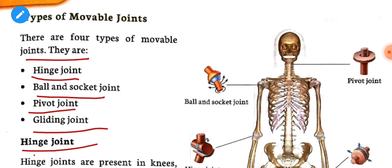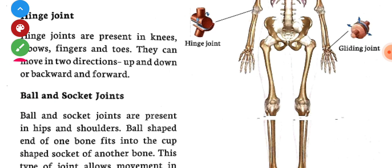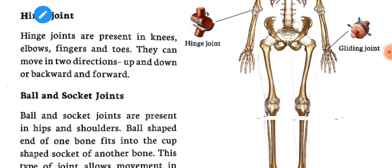Hinge joints are present in knees, elbows, fingers, and toes. They can move in two directions — up and down, or backward and forward. Wherever we have hinge joints, we can move that body part in those two directions.